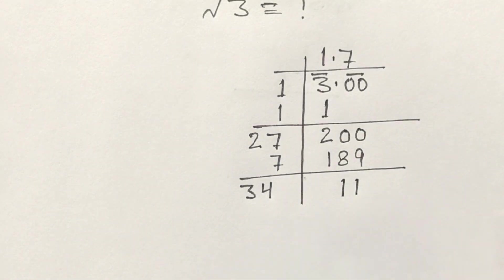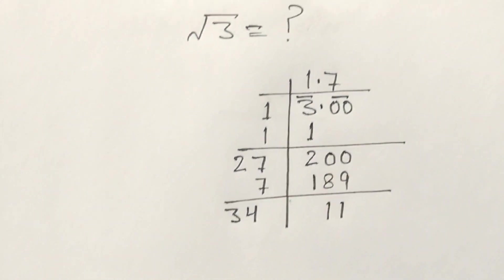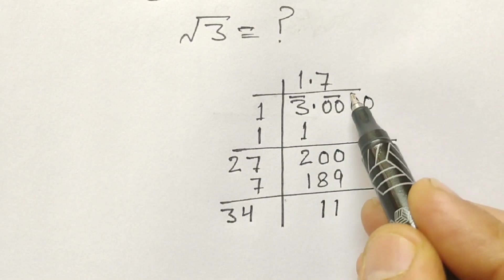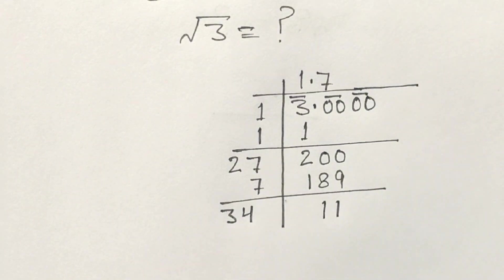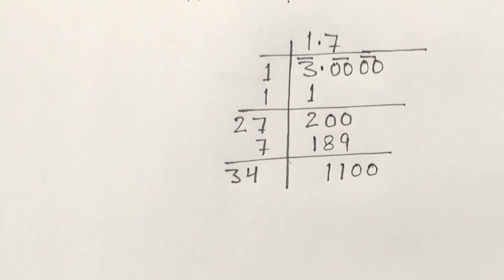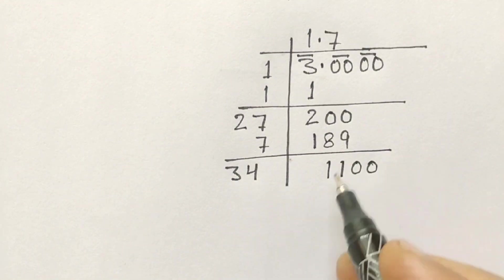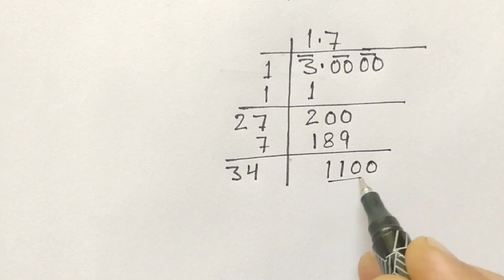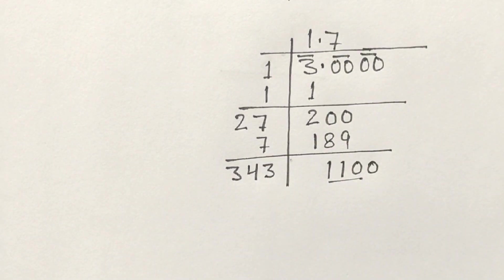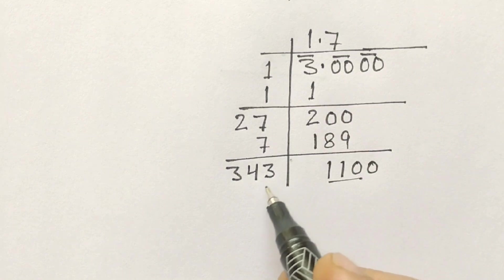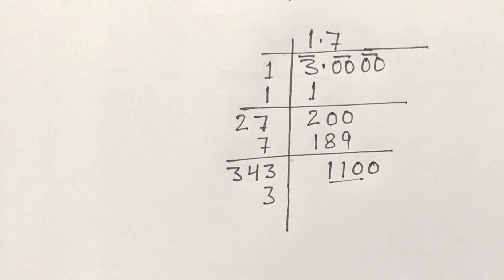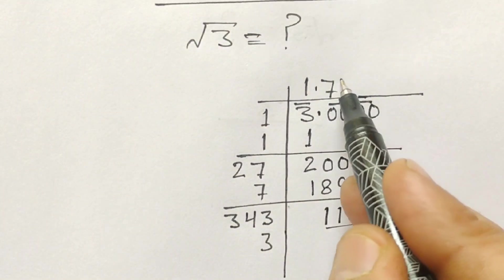Now 200 minus 189 we get 11. Now what will we do? We will again add 0 with pair. So 341, we will take 1100. If we divide by 3 times, so 3 here also 3, and here 3.